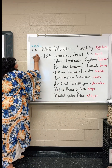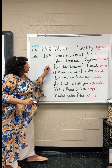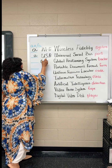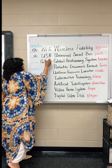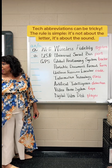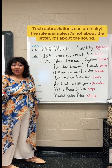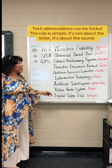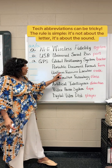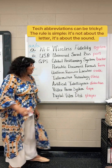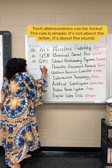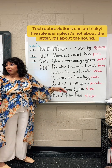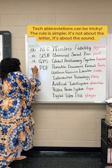Next one: global positioning system. GPS. Is it 'a' or 'an' — a GPS tracker or an GPS tracker? A GPS tracker. Next: portable document format. PDF. Is it 'a' or 'a' — a PDF form? A PDF form.